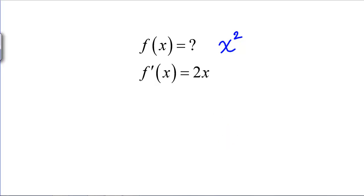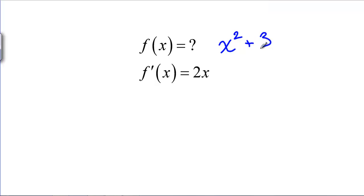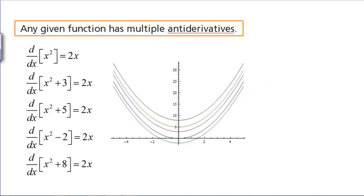But what about the derivative of X squared plus 3? The derivative of X squared is 2X, but the derivative of that constant is 0. So X squared plus 3 would also work. It turns out that any given function has multiple antiderivatives. Here, for example, are a bunch of functions with a derivative of 2X.